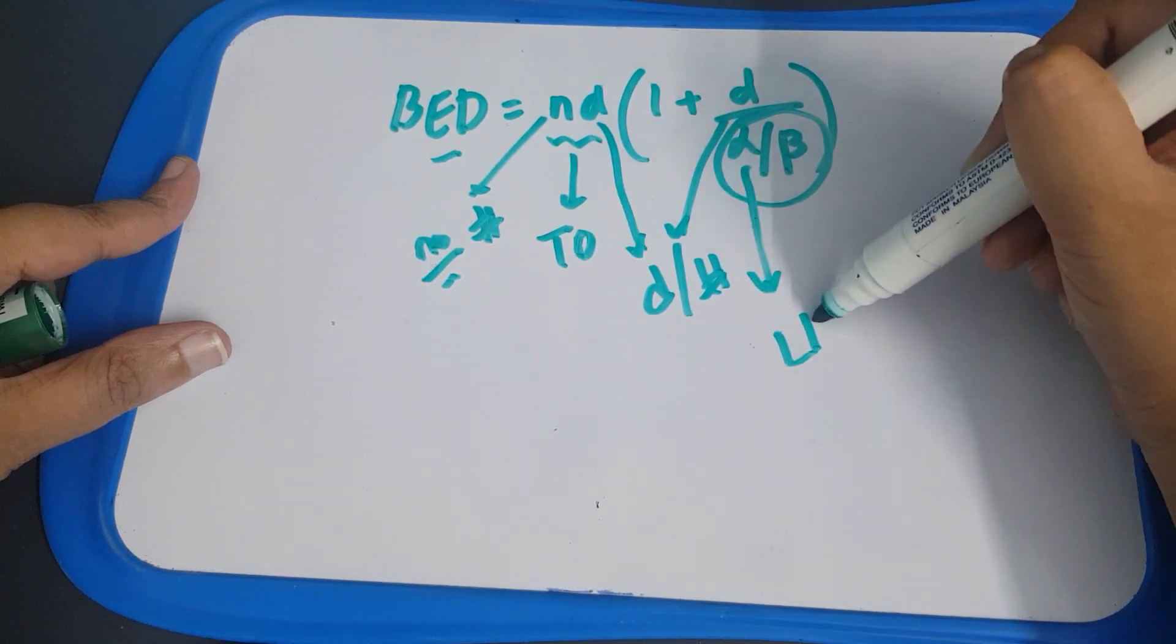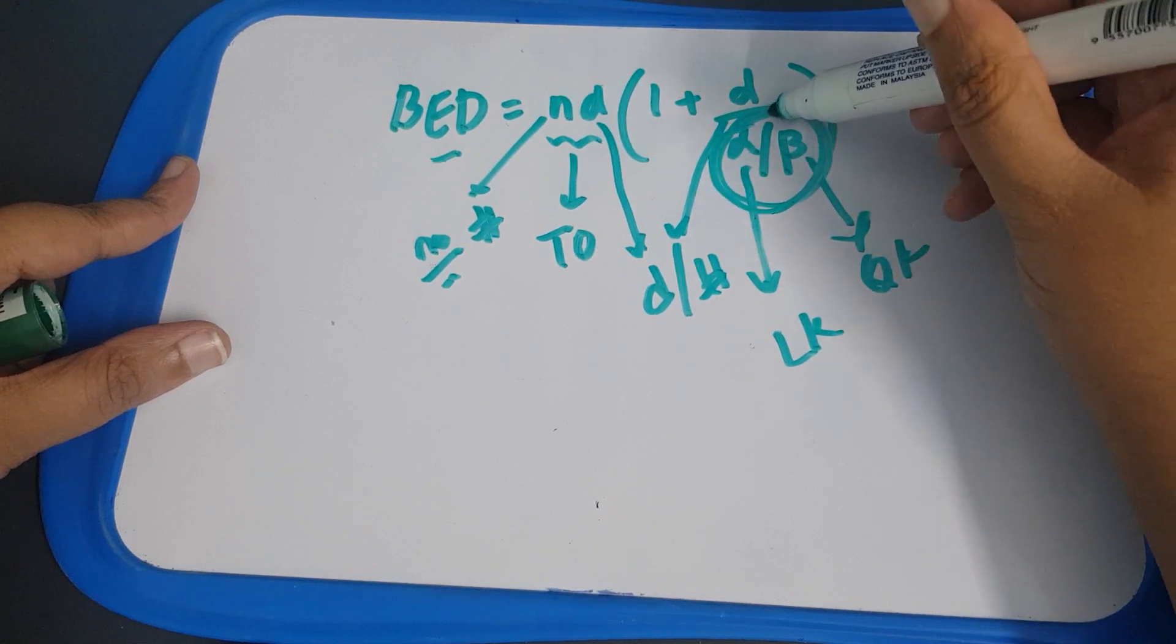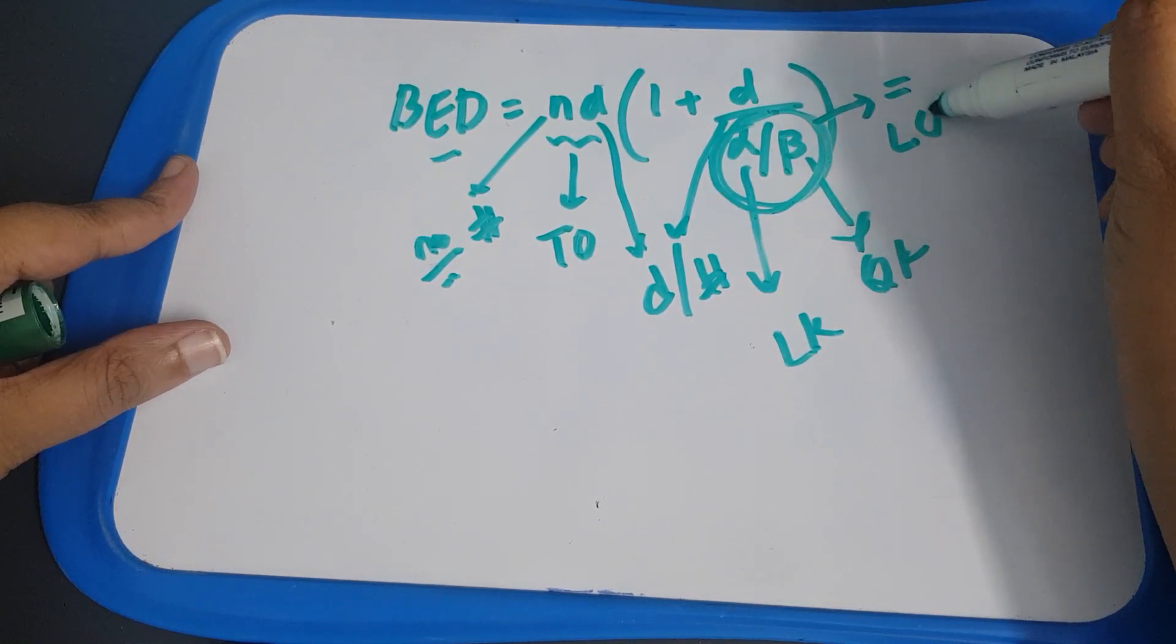We know that this is the linear kill, this is the quadratic kill, and it's the alpha beta ratio where both the kills are equal according to linear quadratic model.